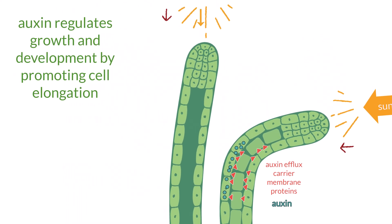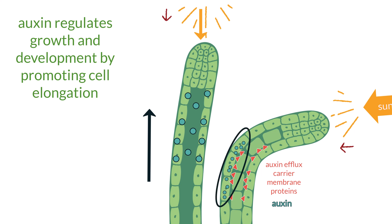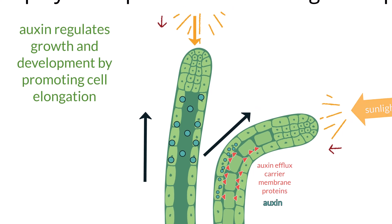If the light source is directly above the plant, auxins will distribute evenly in the shoot tip. As a result, cells on all sides of the shoot elongate at similar rates, and the shoot grows straight upward. In contrast, if light comes from the side, auxins redistribute to the shaded side, causing asymmetric cell elongation and curved growth toward the light — positive phototropism.